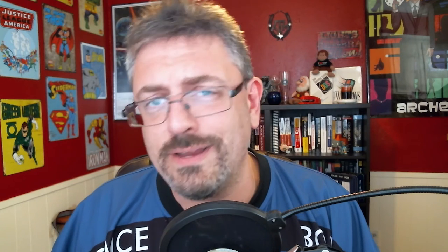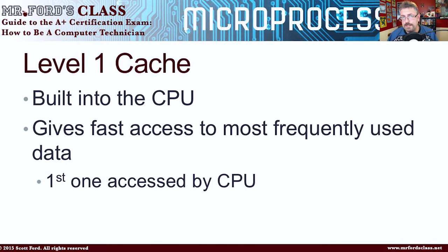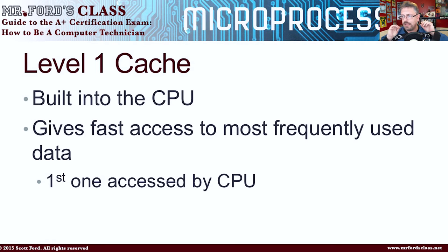In fact, depending on who you read, your CPU doesn't really use a lot of your RAM sticks to do anything. It's usually using stuff in your cache, and that's where most of the processing and memory communication is going on. There are three levels of cache you need to be aware of. Level 1 cache is built right into the CPU — it's right there and it's the fastest of all the different caches. It gives fast access to the most frequently used data, and it's the first thing the CPU is going to go to for information. L1 cache is like that personal assistant walking right behind the CPU.